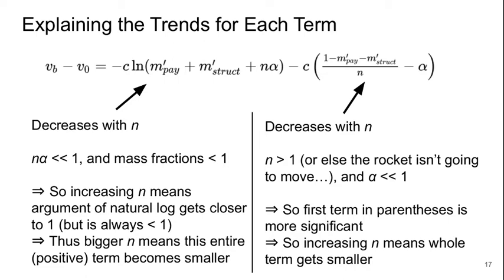Then the second term, the gravity loss term, also decreases with N. N is going to be greater than 1 or else the rocket isn't going anywhere, and alpha is much less than 1 normally. So the first term in parentheses is more significant than the minus alpha. And so increasing N means the whole term, including the C outside, gets smaller.